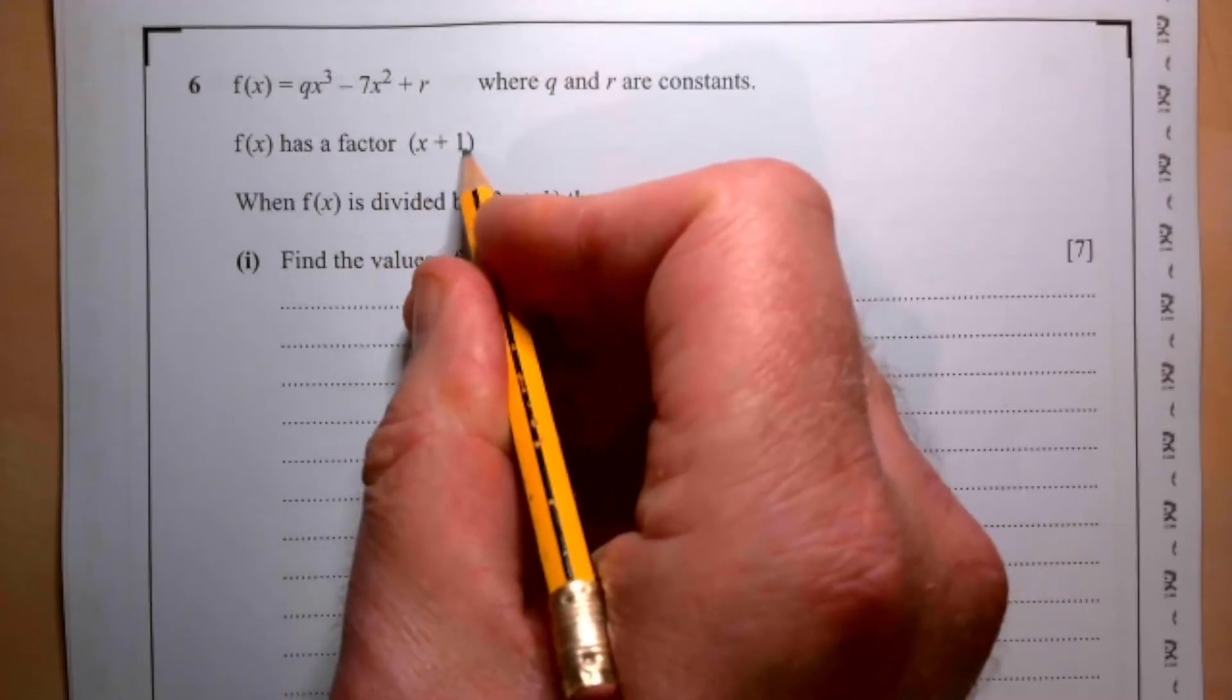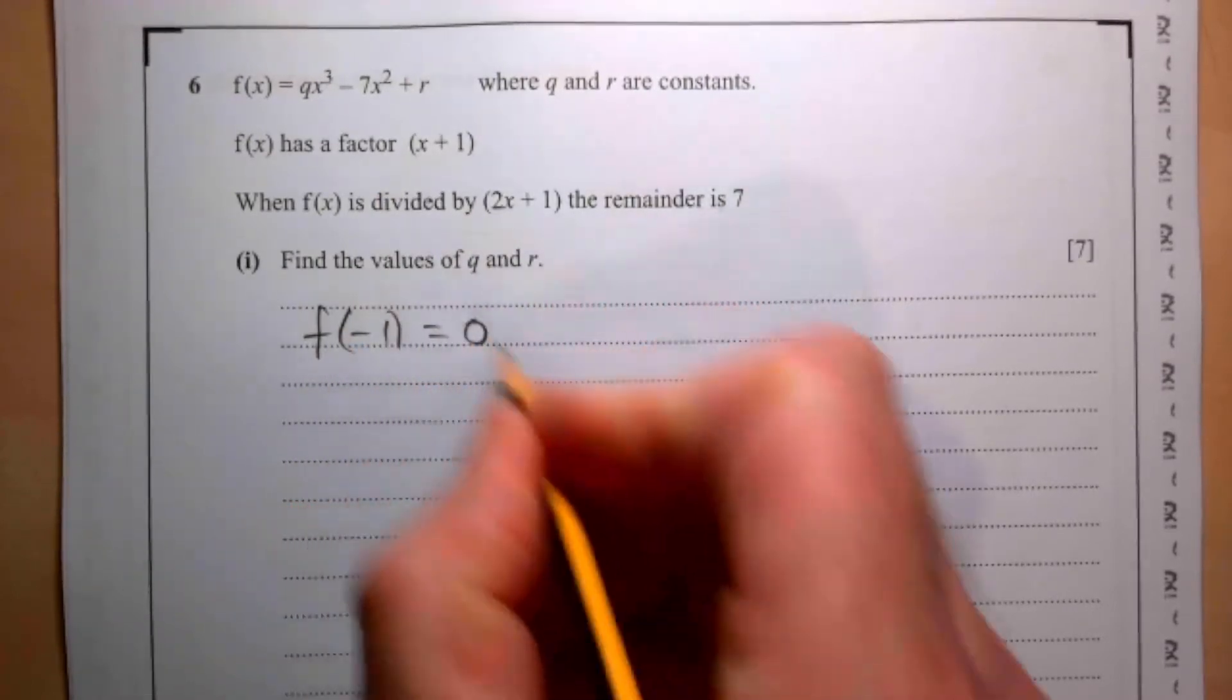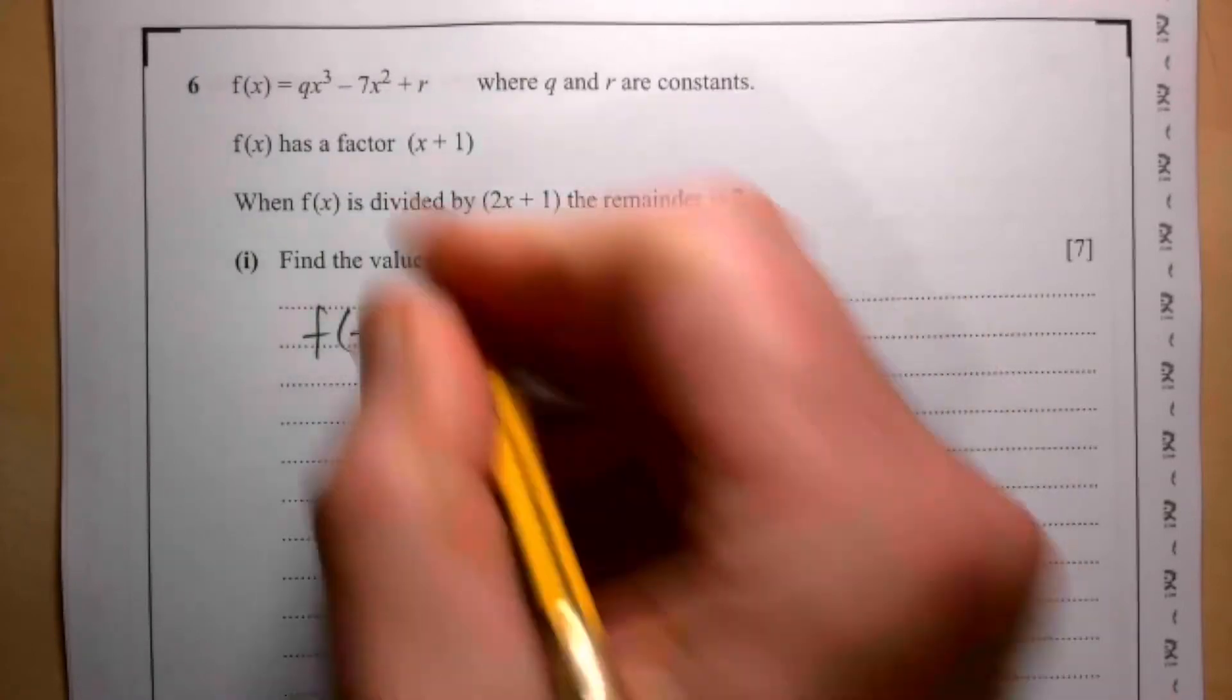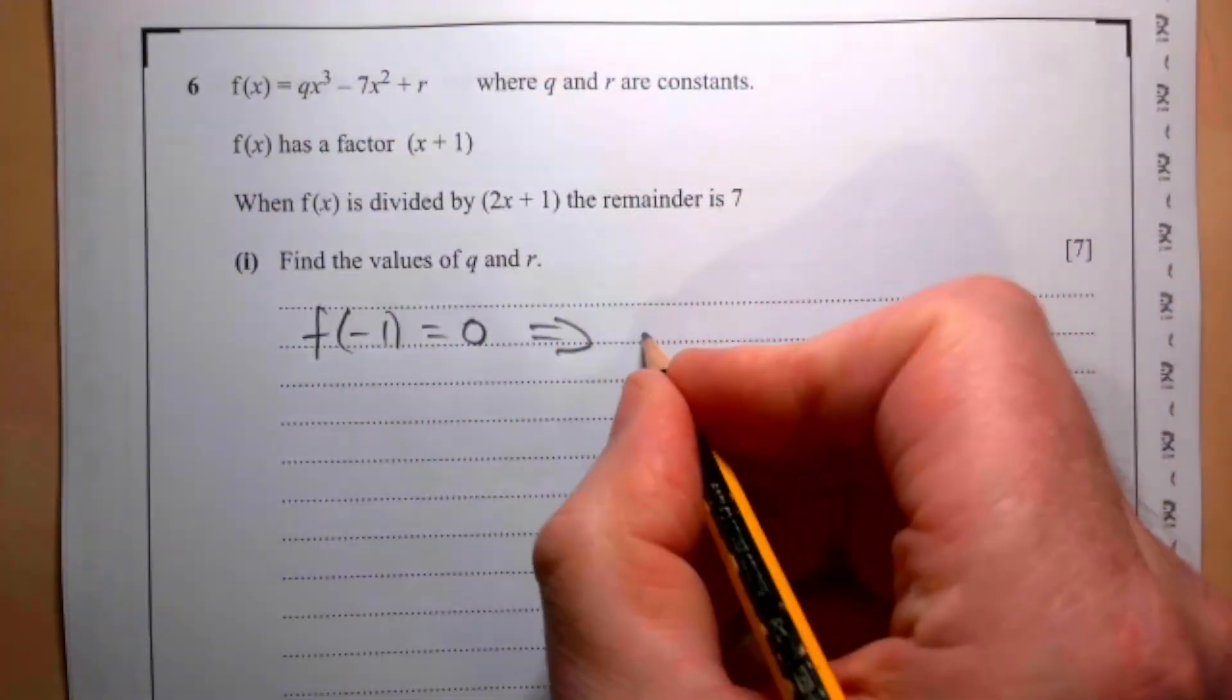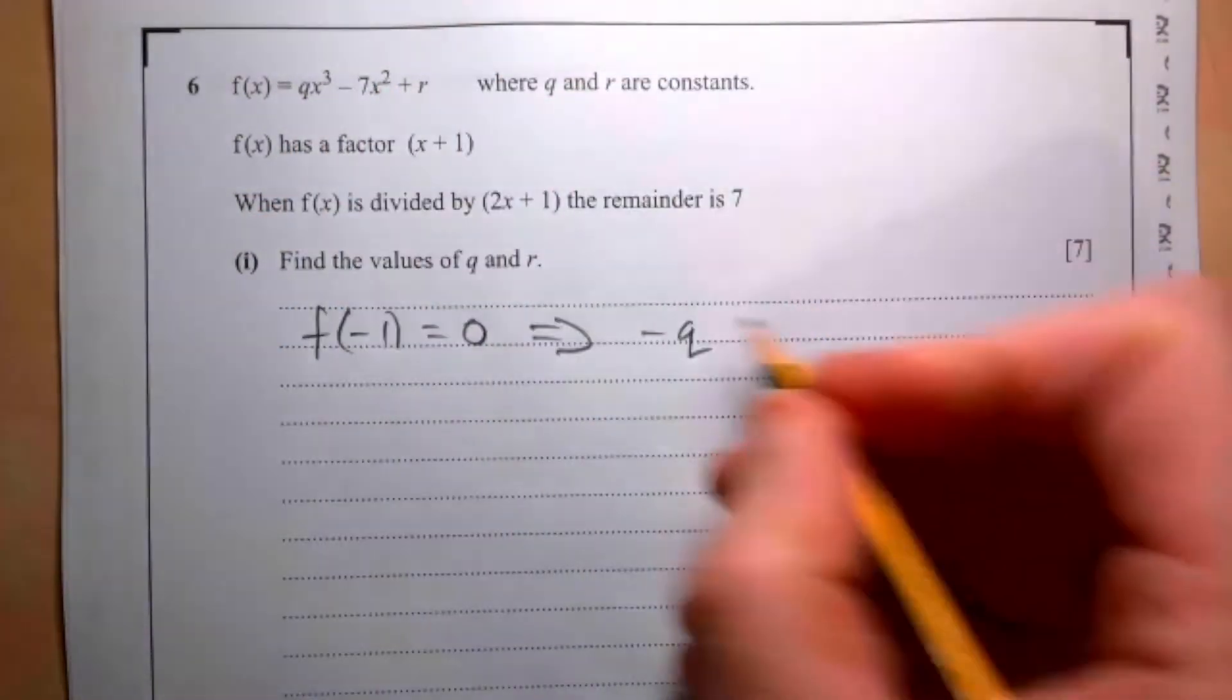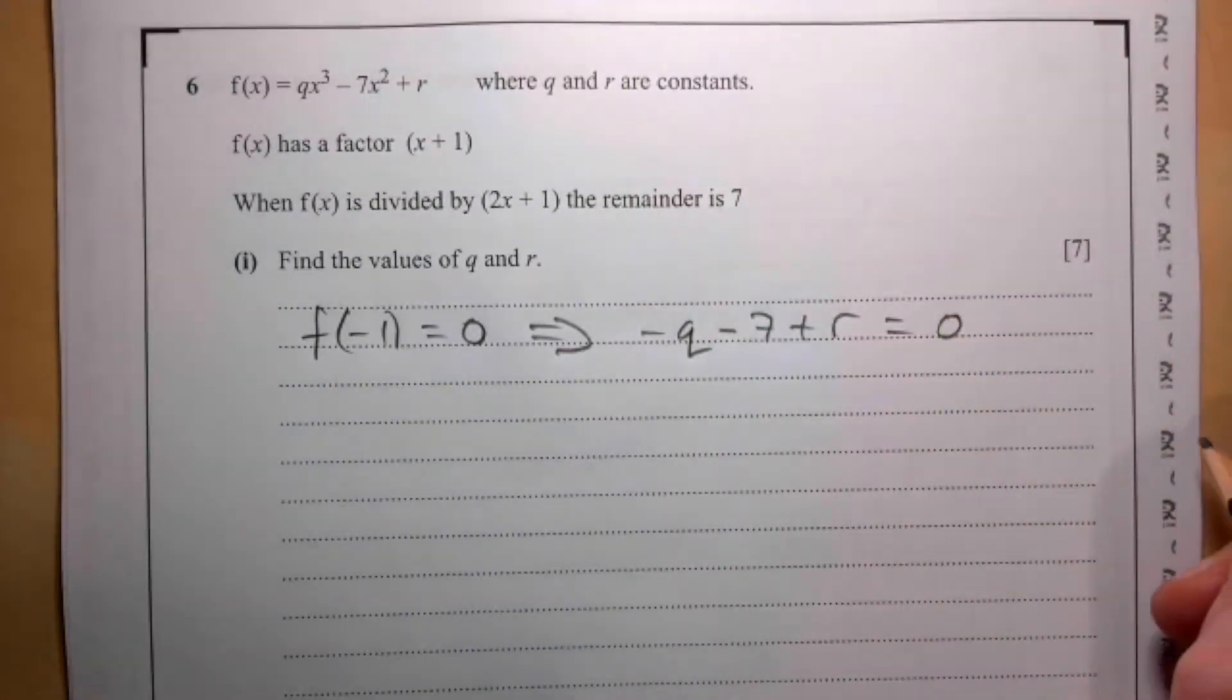Find the values of q and r. If x + 1 is a factor, that means f(-1) must equal 0. So if I substitute in -1 for x, then -1³ gives me -1, so I end up with -q. -1² gives me 1, so it's going to be -7 + r, and we're told that equals 0.